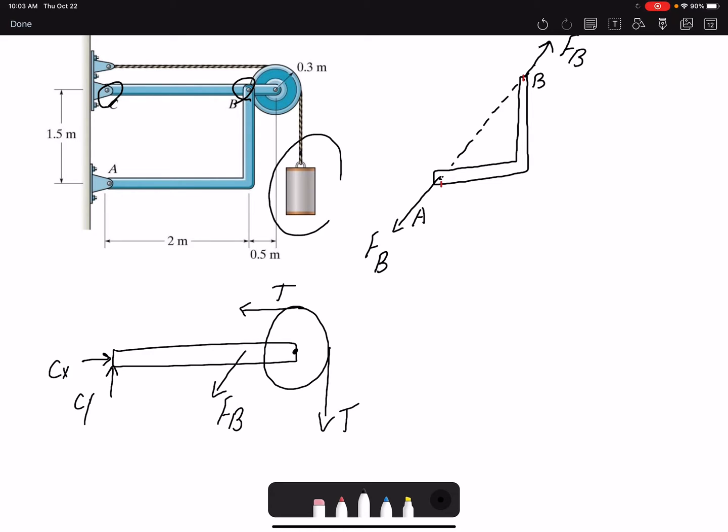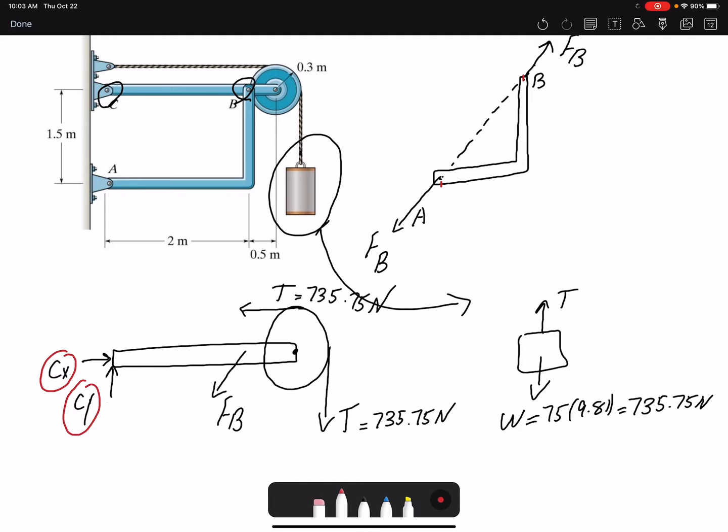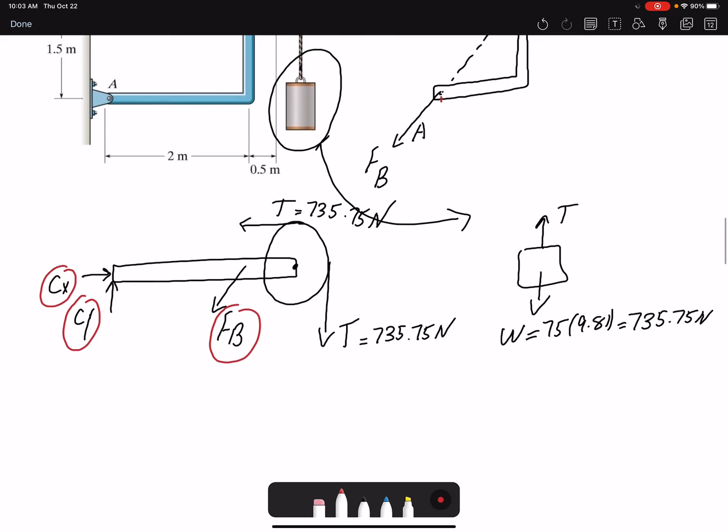If I draw the free body diagram of this cylinder, I can find the tension. So tension, and I have the weight, which is 75 times 9.81 will give me 735.75 newtons. So now I can write the value for tension in my free body diagram. Looking at the free body diagram, I have three unknowns: Cx, Cy, and FB.